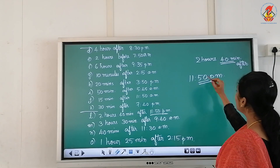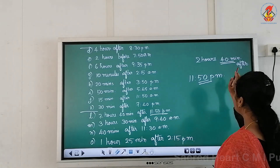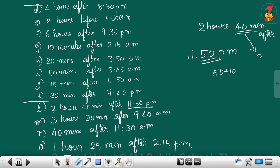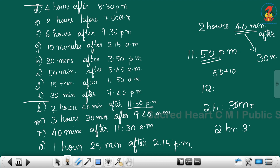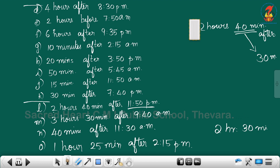There are forty minutes to add, and the current time has fifty minutes. Fifty compared to sixty — we need ten more minutes to reach sixty. So fifty plus ten equals sixty minutes, meaning one hour passes and thirty minutes are left. The time moves to twelve, then after two hours total with thirty minutes remaining, the answer is two thirty.